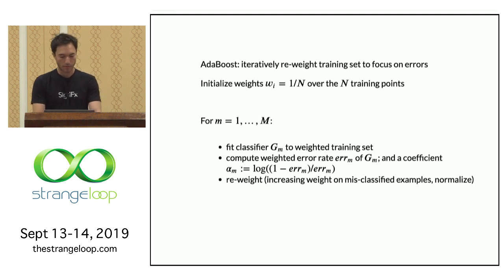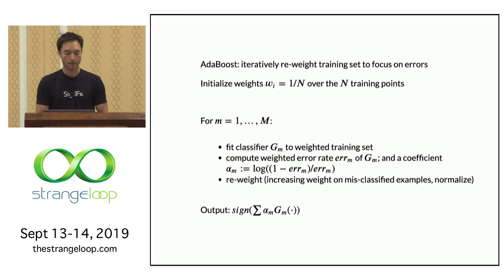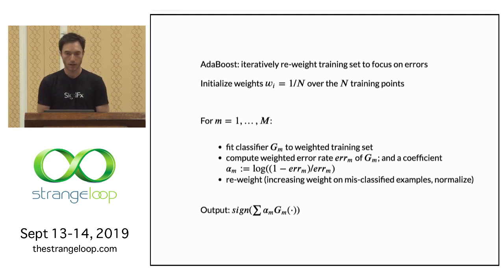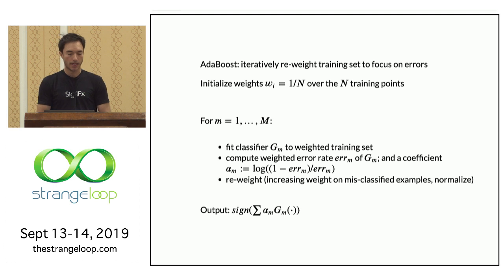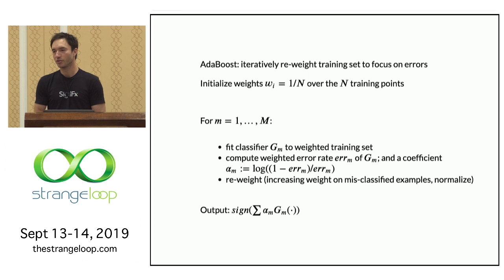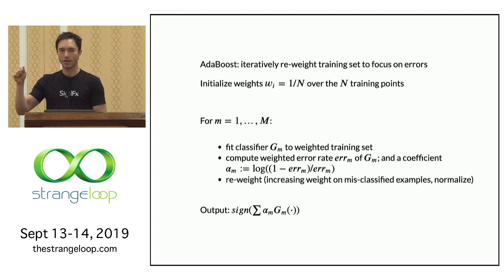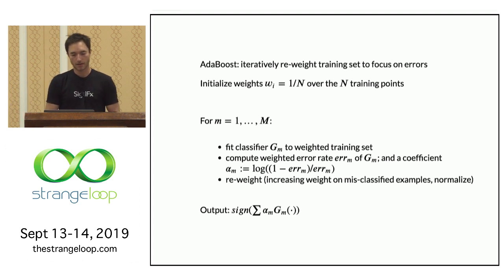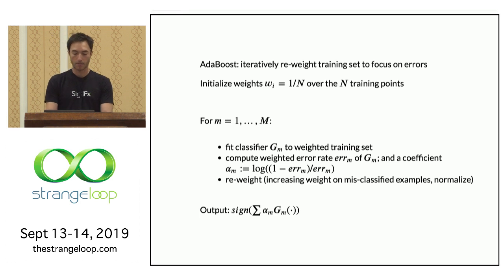You keep going for some number M of iterations, and at the end you output the sign of the weighted sum of the individual classifiers obtained. This is often presented with decision stumps — a decision tree with a single node — as the base classifiers: a single feature and threshold. You can't make very good decisions just using those, but if you form linear combinations of them using this procedure, it turns out you can make much better decisions.